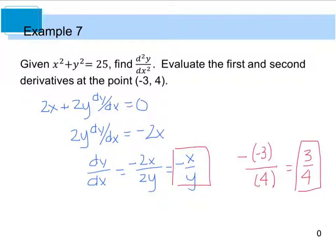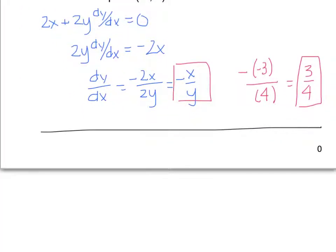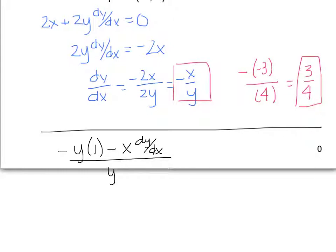Now for the second derivative, we're going to take the derivative of the previous derivative, and we'll use the quotient rule. We have a negative, then the bottom times the derivative of the top, minus the top times the derivative of the bottom — which is y, giving us dy/dx — all divided by the bottom squared. This equals the second derivative, d²y/dx².